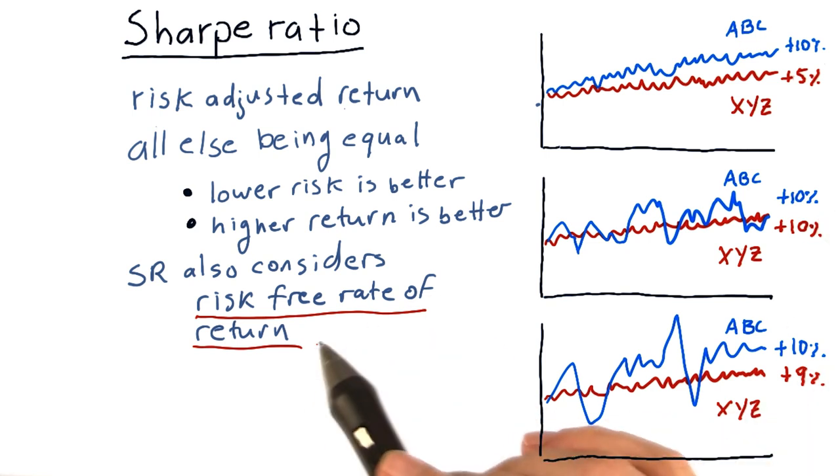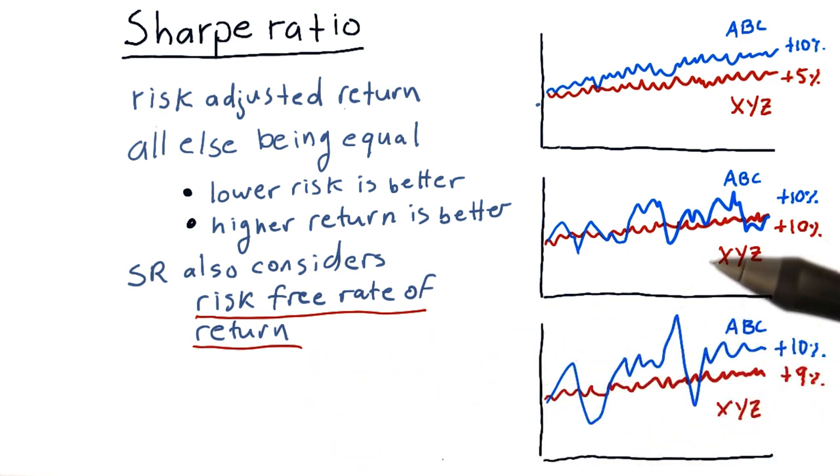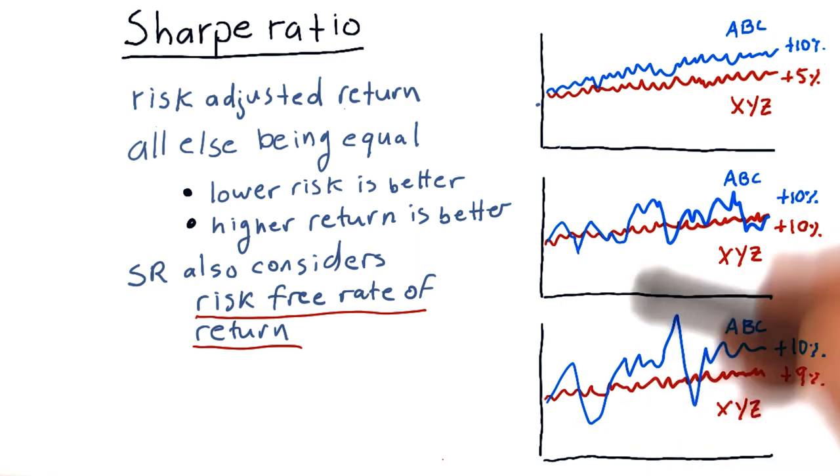The reason that it includes this number is we always need to consider, gee, maybe this asset we've got isn't performing as well as the return I would get if I just put it in the bank.